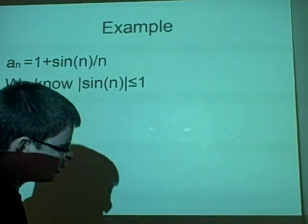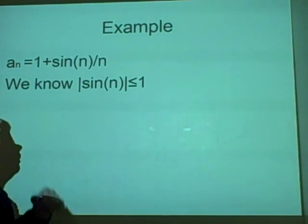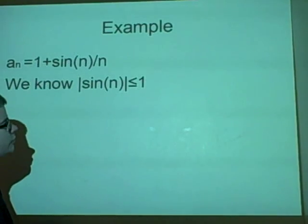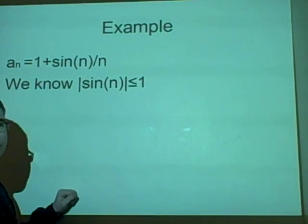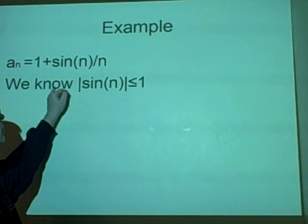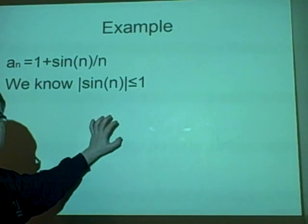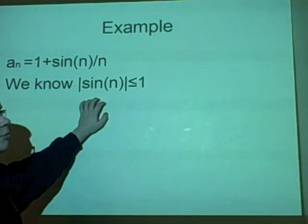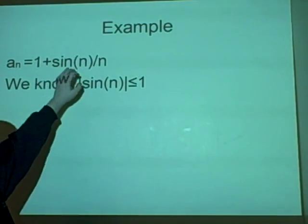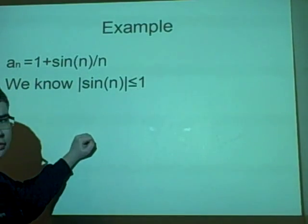Right now, we can put that in the form then, we can say that the lower bound of this is going to be 1 minus 1/n, because minus 1 is the lowest it can be. And the upper bound is going to be 1 plus 1/n.